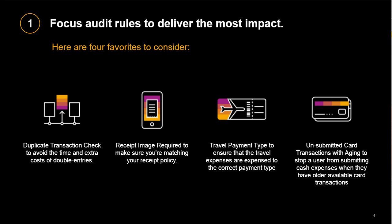Receipt image required — this rule ensures users add an image of a receipt within the parameters you've set, so nobody has to chase down receipts after the fact and you automatically reinforce your receipt policy. Travel payment type — this rule ensures that each employee has the correct payment type for travel expenses such as air, car, and hotel. Employees can confuse travel segments with card transactions causing duplicate entries, and this rule can help eliminate that.